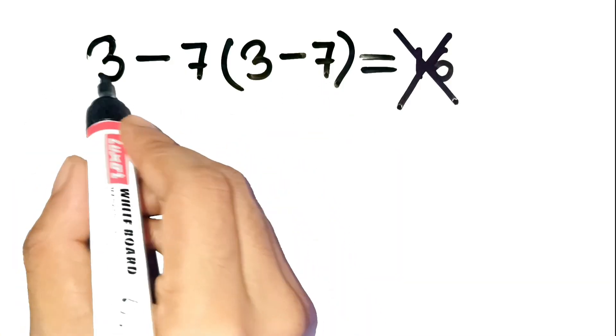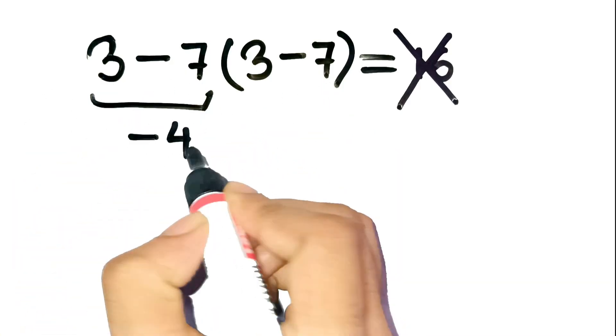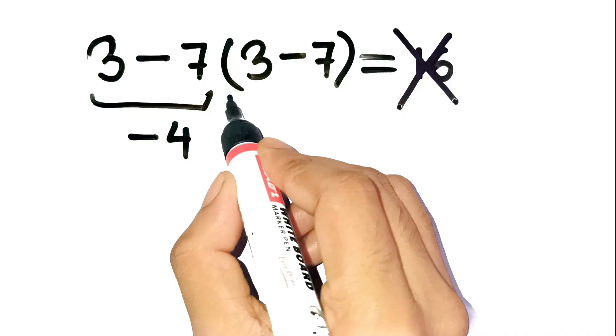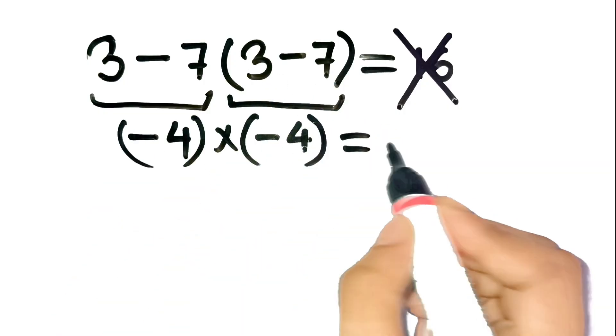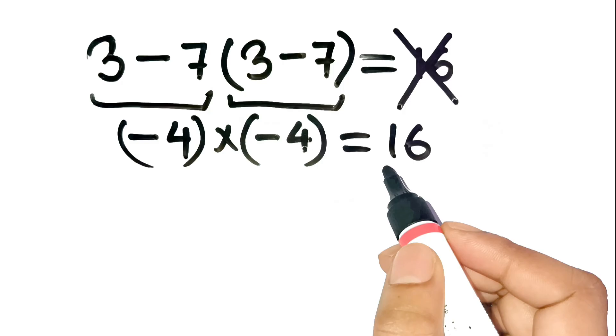Most people think, okay, 3 minus 7 is negative 4. And inside the parenthesis, 3 minus 7 is also negative 4. Then negative 4 times negative 4 is 16. Makes sense at first glance, right?